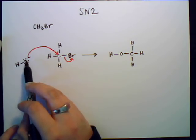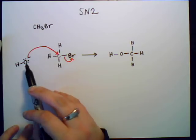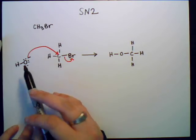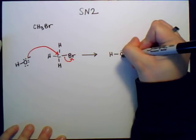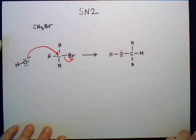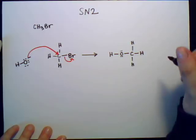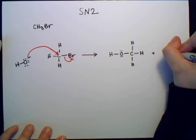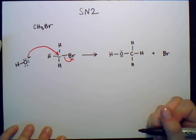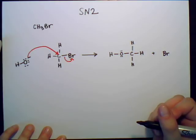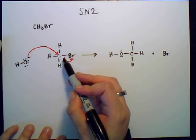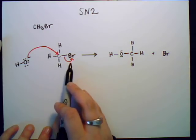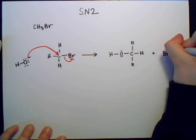Two of those electrons have now contributed to a bond between this carbon and the oxygen, so we have four electrons left, or two lone pairs. I'm going to draw them in right there. And then what happened to the bromine? Now we have the bromine left over, and now this is going to be a negatively charged bromine because it received the electrons that came off of this bond right here, and that's shown by that red arrow there.